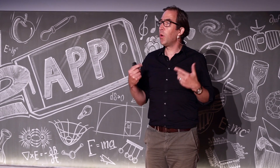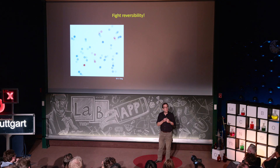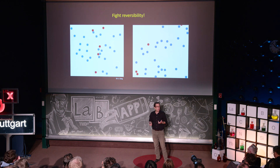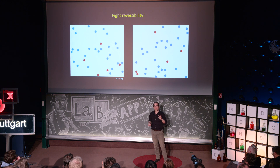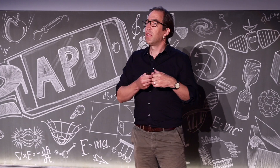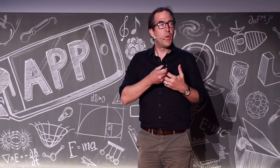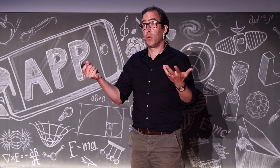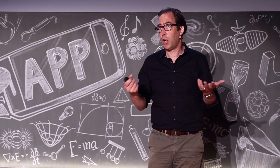In our research, we want to fight reversibility. We want to break this law — we want to let molecules go one way only, in one dimension, in a controlled fashion. That means we have to break the laws of thermodynamics. We also want to be selective: only the red ones move, the blue ones don't. How can we achieve that?